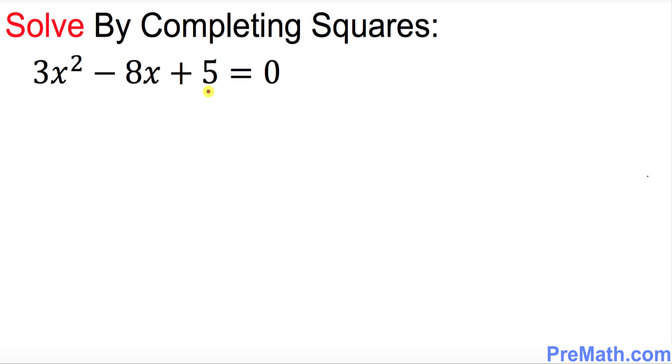The very first thing we need to do is we must leave only x variables on the left hand side. That means this constant 5 should go on the other side, so I'm going to subtract 5 from both sides. So we got 3x² - 8x turns out to be equal to -5.